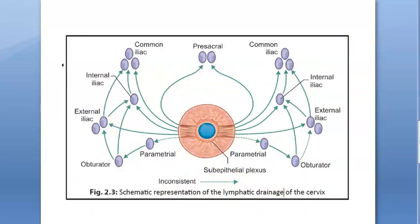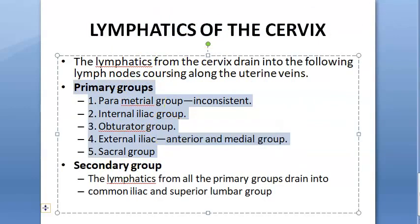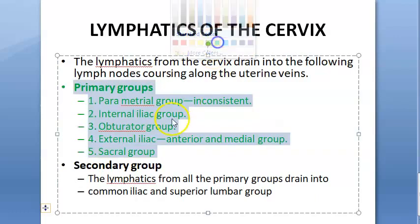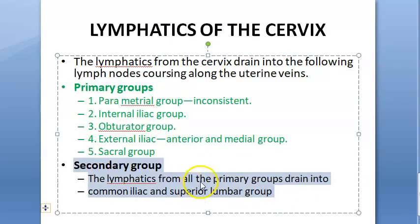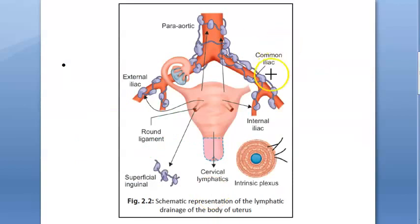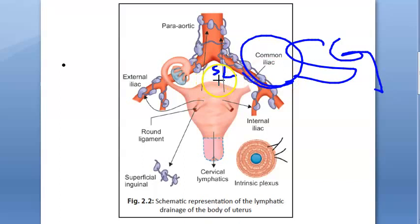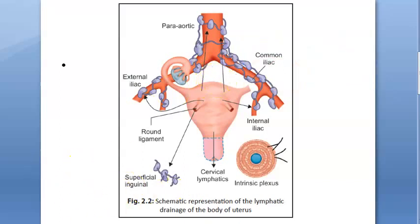Now look at the lymphatic drainage of the cervix. You have a primary group - this is more important for you to remember because all the primary groups will finally drain into the secondary group, which is the common iliac and the superior lumbar. Every primary group will finally drain into the secondary groups: the common iliac and the superior lumbar.